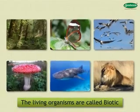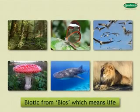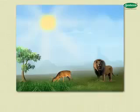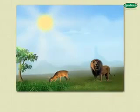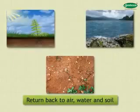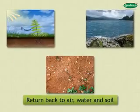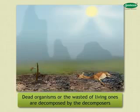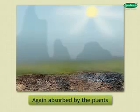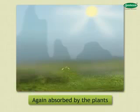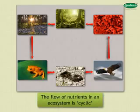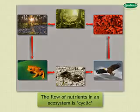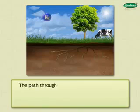Nutrients move from one trophic level to another and finally return back to air, water, and soil when dead organisms or the waste of living ones are decomposed by decomposers, which are again absorbed by the plants. Thus, the flow of nutrients in an ecosystem is cyclic.